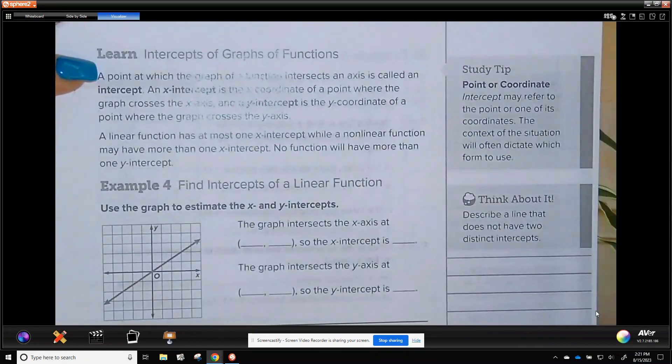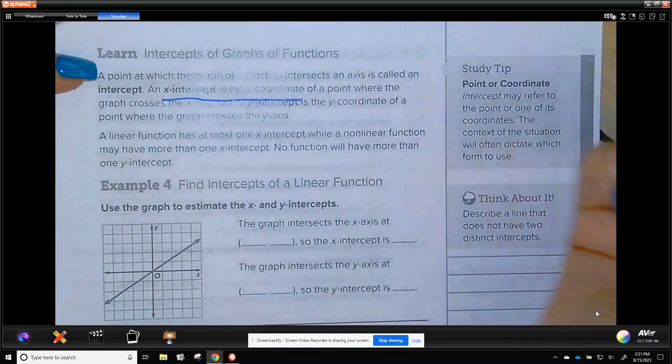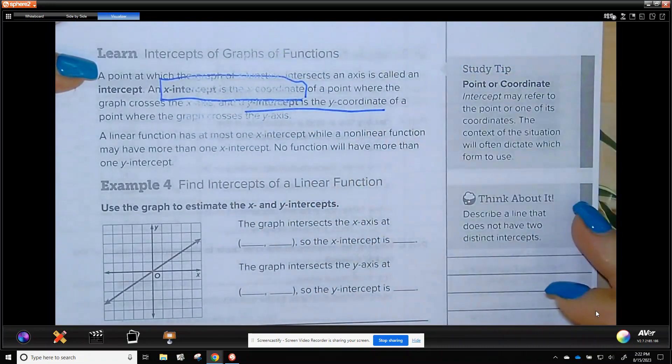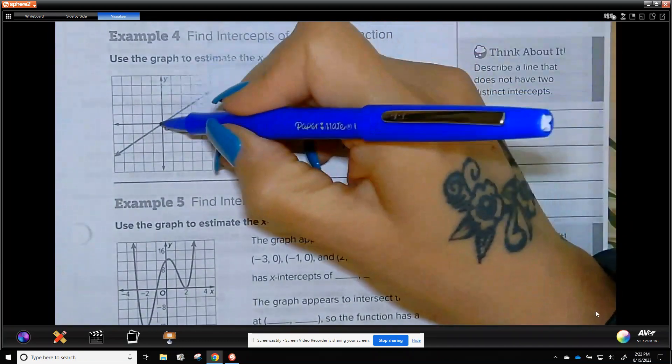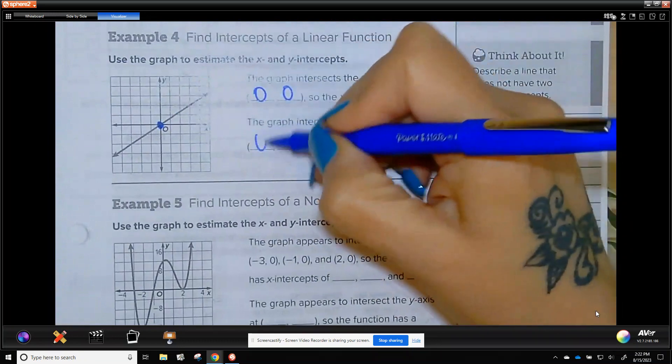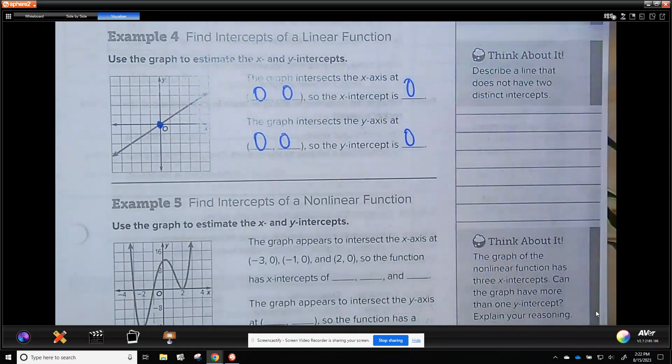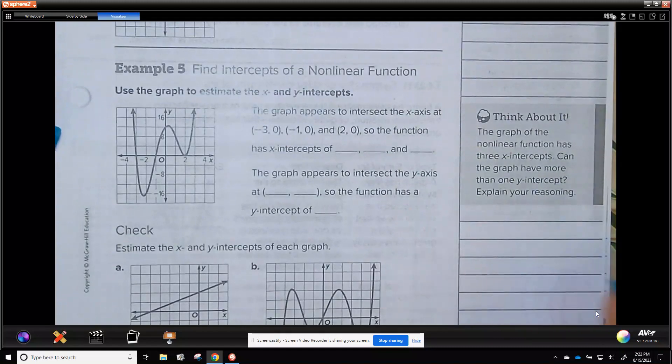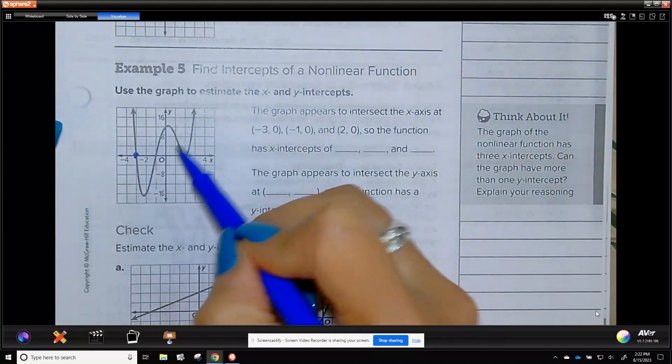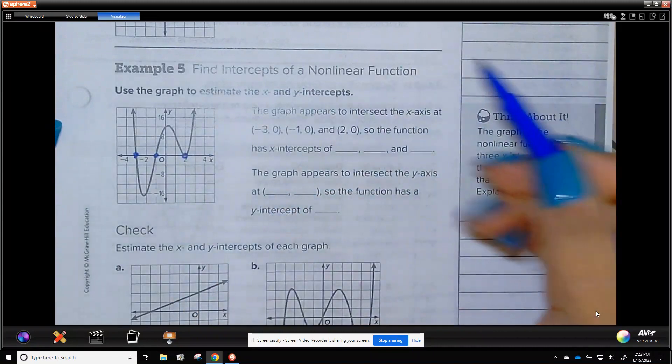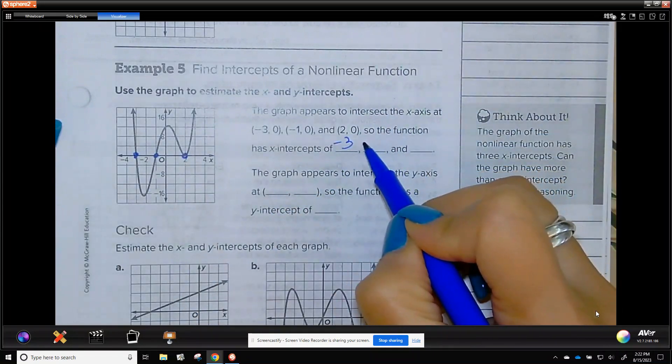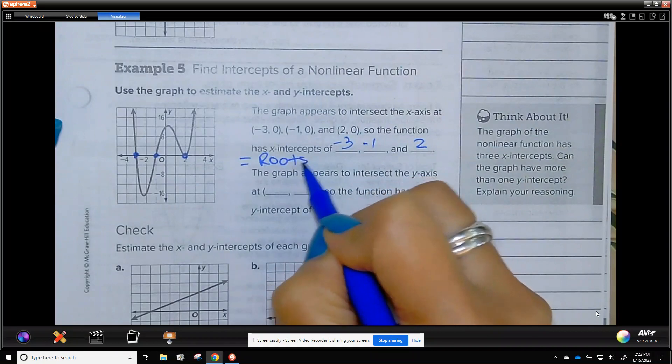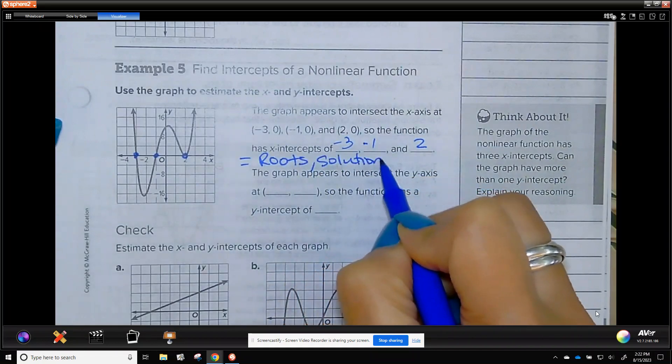Let's get into x-intercepts and y-intercept. X-intercept crosses the x-axis, y-intercept crosses the y-axis. This one they gave you is the same point for both, because it goes through the origin, 0, 0. So, the x-intercept is 0, and the y-intercept is 0. Let's talk about a polynomial. So, a polynomial here, I have negative 3, negative 1, and 2. These are your x-intercepts.